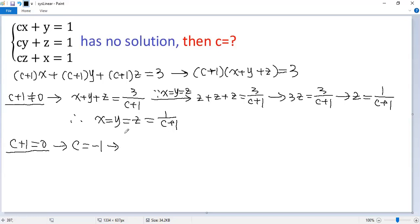In this case, we get 0 times x plus y plus z equals 3. So we get 0 equals 3. There's no solution for this case.